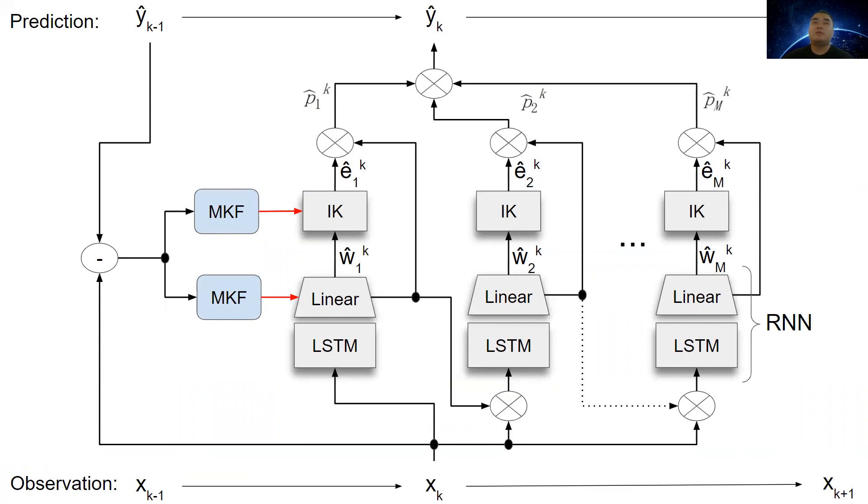With that being said, this is a complete view of the motion prediction pipeline. The MKF is constantly adjusting the parameters in RNN and IK to improve the performance.